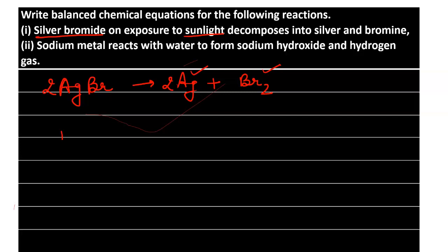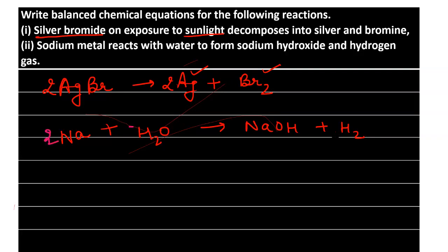Sodium metal reacts with water to form sodium hydroxide and hydrogen gas. To balance this equation, we write: 2Na + 2H2O → 2NaOH + H2. We have 2 sodium atoms on each side, 4 hydrogen atoms total on both sides (2 in NaOH and 2 in H2), and 2 oxygen atoms on each side. The equation is completely balanced.